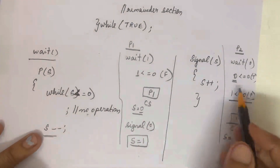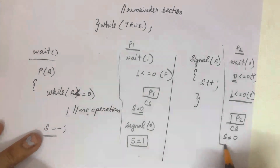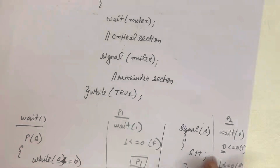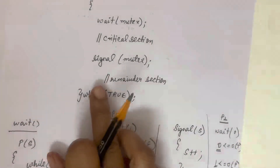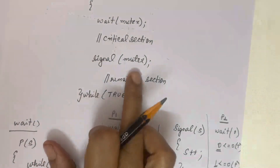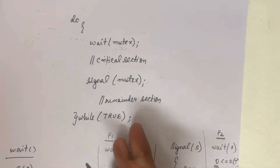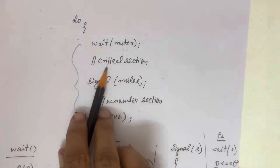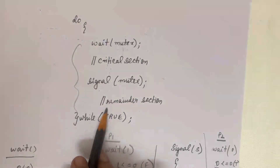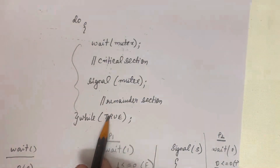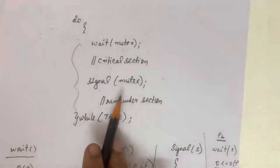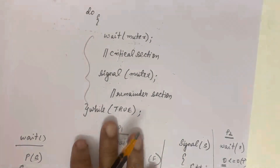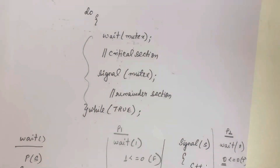P2 is now inside the critical section and s is decremented from 1 to 0, so P1 cannot enter. Once P2 finishes execution it calls signal(mutex). So whenever any process wants to enter, it calls wait(mutex), executes the critical section, then calls signal(mutex), and executes the remainder section. This is the code for implementing mutual exclusion.